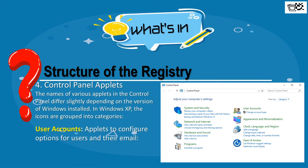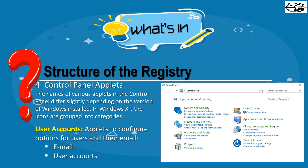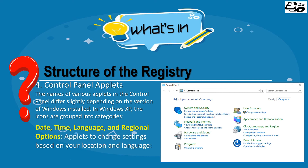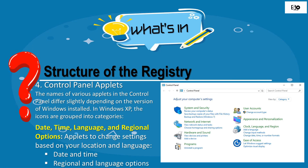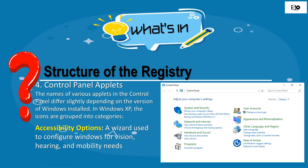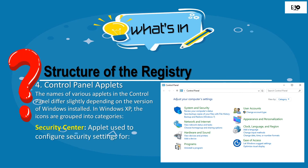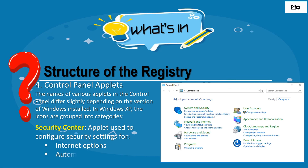User Accounts contains applets to configure options for users and their email, including Email and User Accounts. Date, Time, Language, and Regional Options contains applets to change settings based on your location and language, including Date and Time and Regional and Language Options. Accessibility Options is a wizard used to configure Windows for vision, hearing, and mobility needs. Security Center contains applets used to configure security settings for Internet Options, automatic updates, and Windows Firewall.